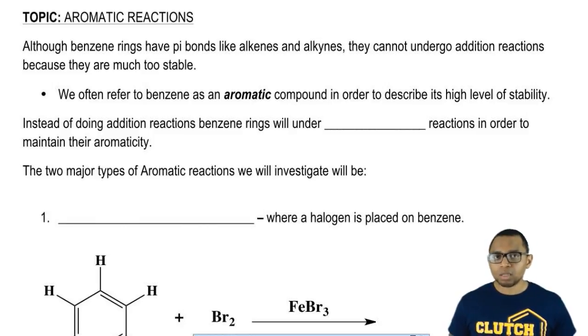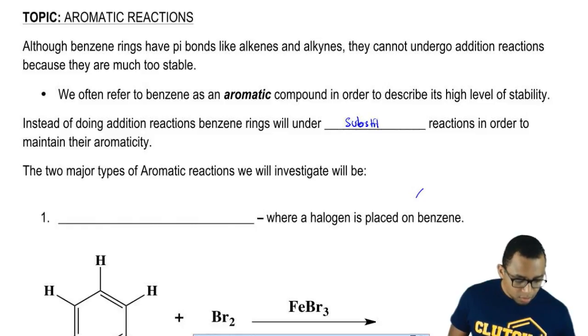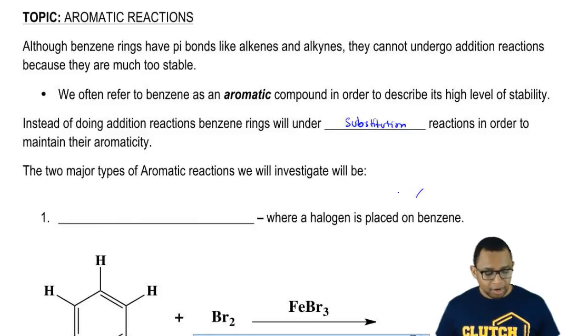They belong to a class of compounds called aromatic compounds, and aromatic compounds don't want to do addition reactions. Instead of doing addition reactions, benzene rings as well as other aromatic compounds will instead do a substitution reaction in order to maintain their aromaticity.